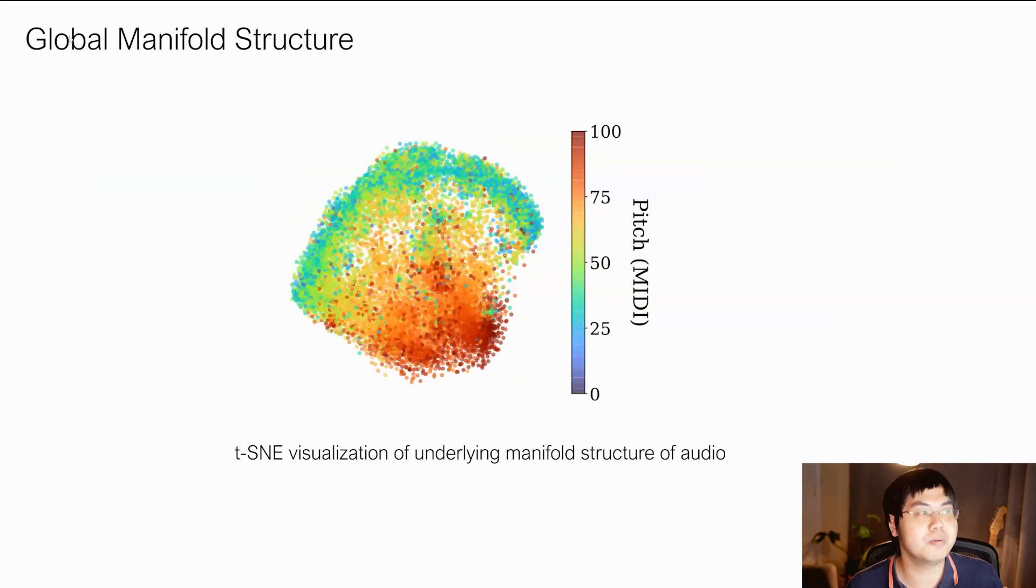We can further assess the global manifold structure of our approach. We take the latent learn from our approach and apply a t-SNE clustering on them. We find that if we color code the t-SNE embeddings with the corresponding pitch for audio snippets, we find that our approach correctly clusters lower audio pitch sounds to the outside and higher frequency ones towards the inside.